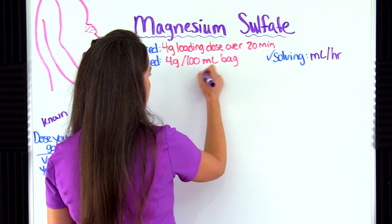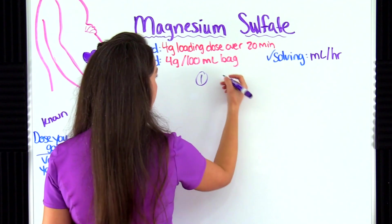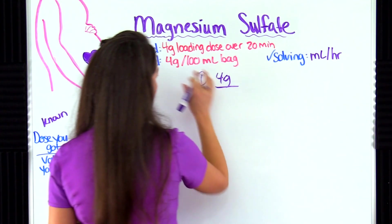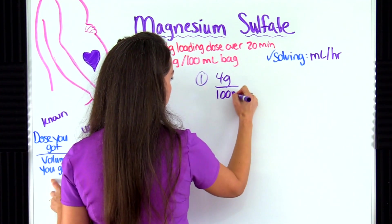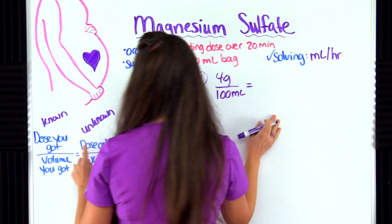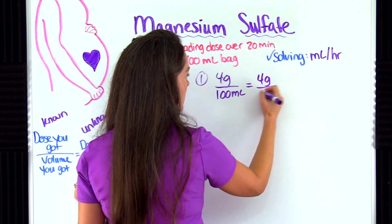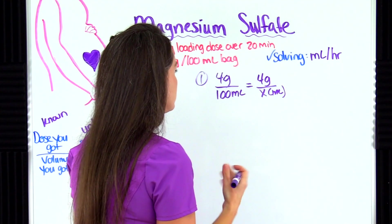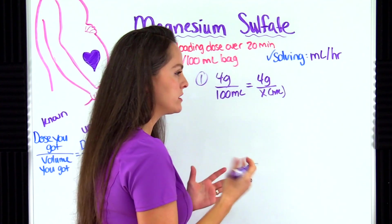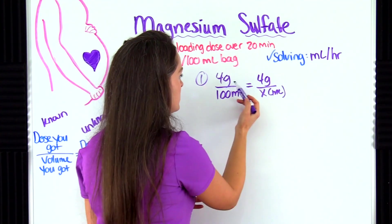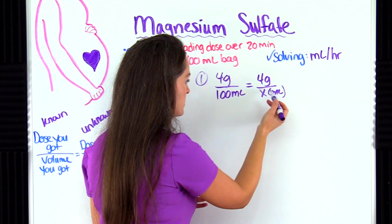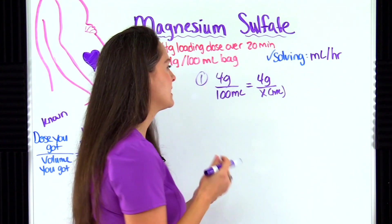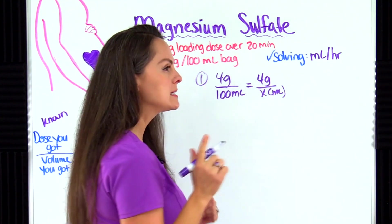So first we create our known ratio: the dose we got is four grams over the volume we got, which is 100 milliliters. That equals the dose ordered — four grams — over x, solving for milliliters. Before you cross multiply, always check that your units of measurement match up. Grams match grams, milliliters match milliliters — good. If they didn't match, you'd need to convert, like grams to milligrams. So always keep that in mind.